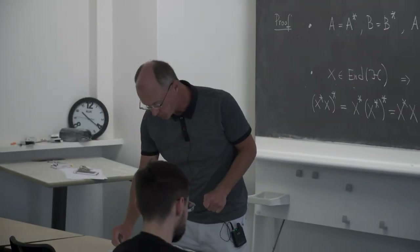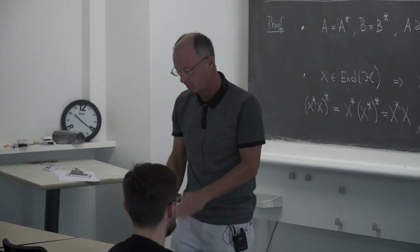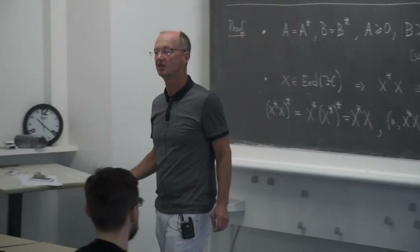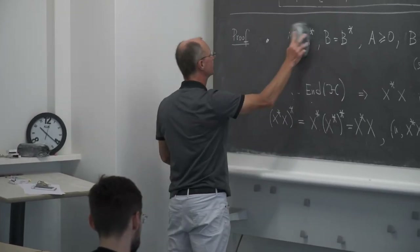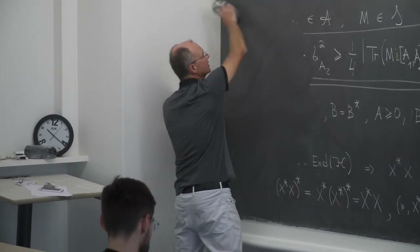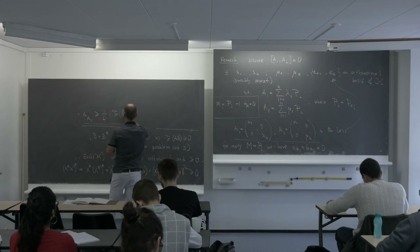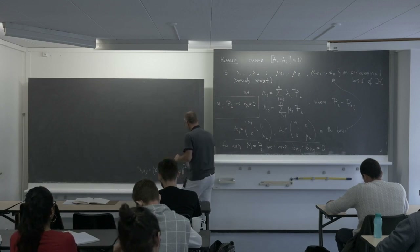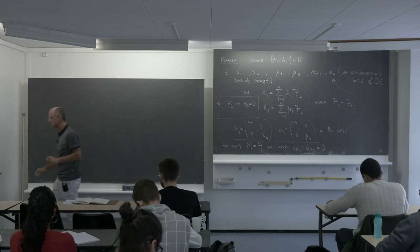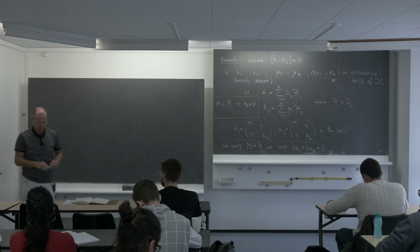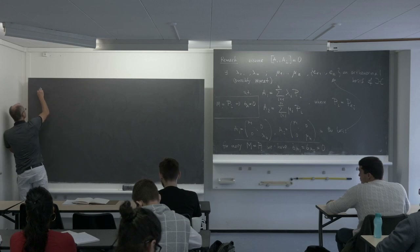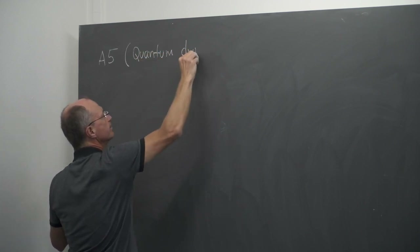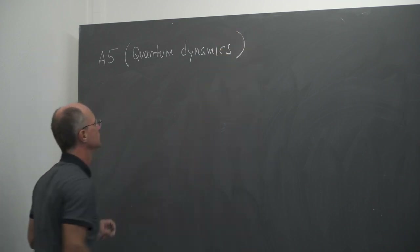We will return to observables with vanishing commutators a bit later. Now I want to present the last axiom. We started last time with some axioms introducing observables, states, and measurements. Now that is the last axiom.